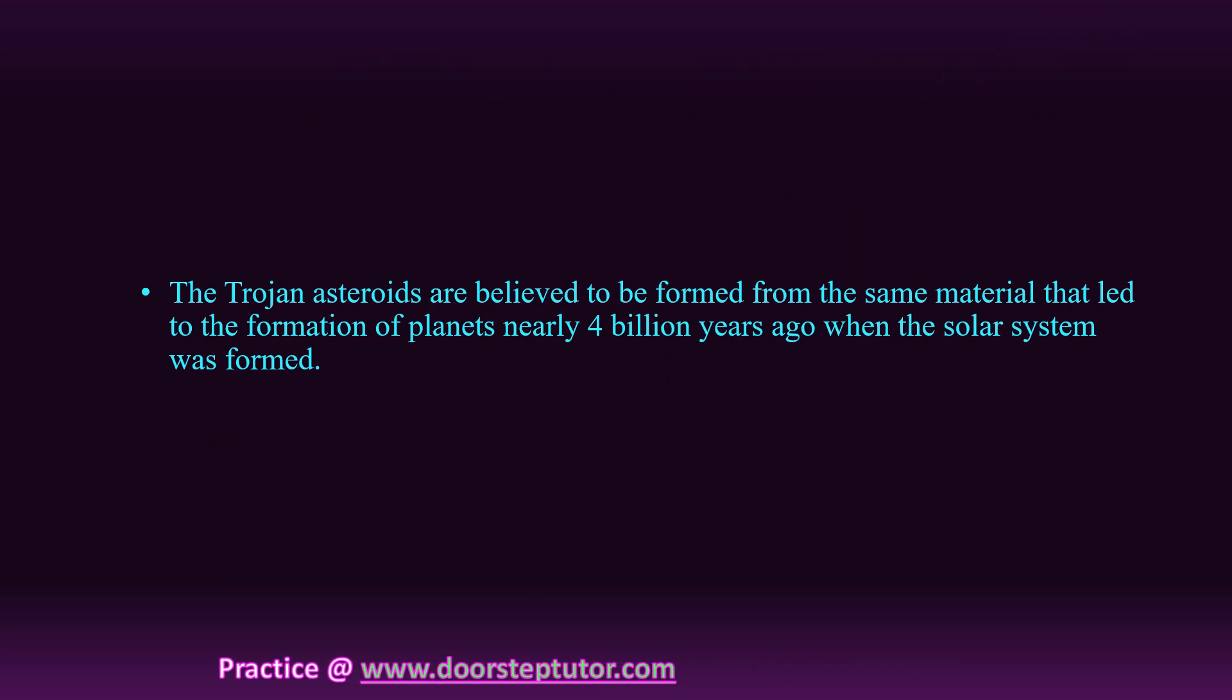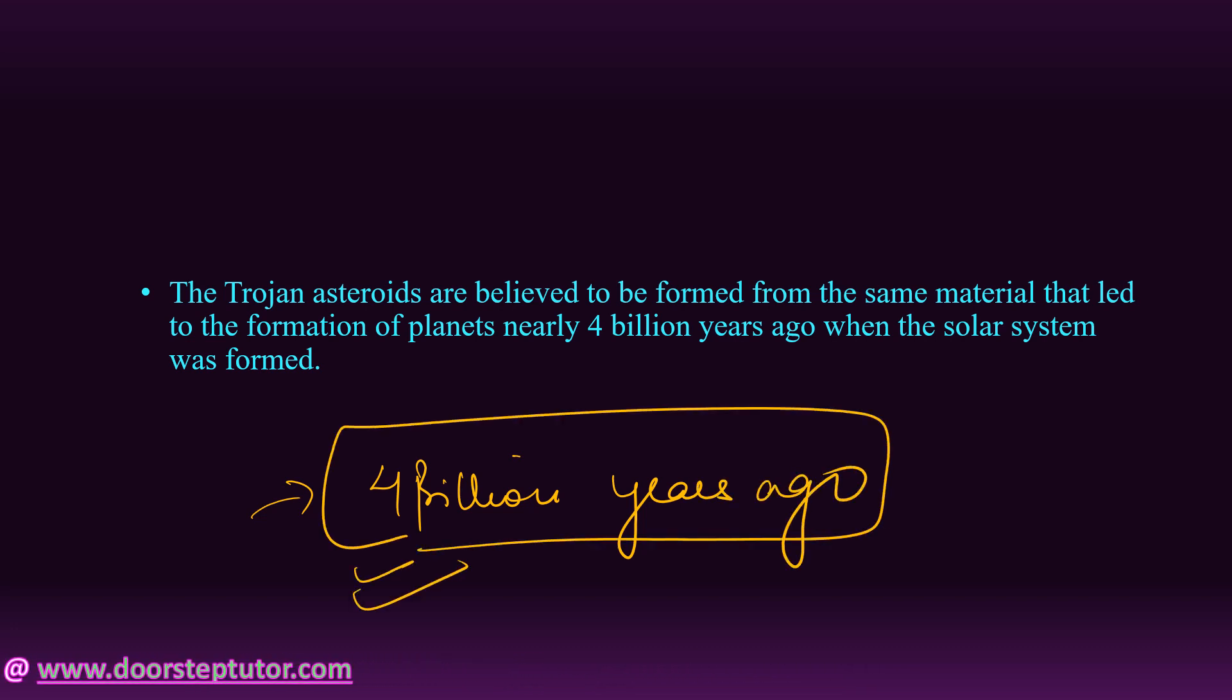What is the significance? Trojan asteroids are believed to be formed from the same material that led to the formation of the planets, and that too 4 billion years ago. The mission is designed to understand the composition of the diverse asteroids, how they are formed, determine the mass and densities of the materials, and to look for and study the satellites and rings that may orbit the Trojan asteroids. Scientists are more concerned about understanding the origin and evolution.